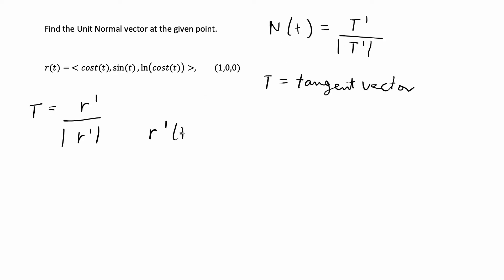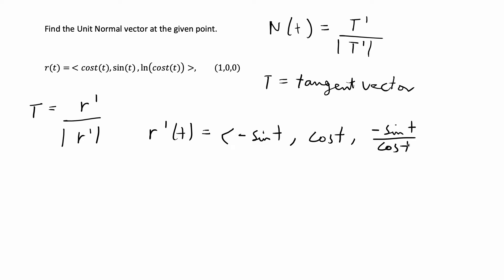r'(t) is equal to the derivatives of the three components of r(t). The derivative of cos(t) is -sin(t), the derivative of sin(t) is cos(t), and the derivative of ln(cos(t)) is equal to -sin(t)/cos(t), which is also equal to -tan(t).